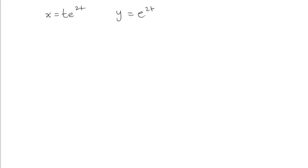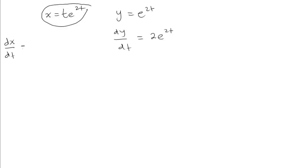We need to find dx/dt and dy/dt. Since dy/dt is easier, we find that first: dy/dt equals 2e to the power of 2t. To find dx/dt we use the product rule, giving dx/dt equals t times 2e^(2t) plus e^(2t) times 1, which simplifies to 2t·e^(2t) plus e^(2t).